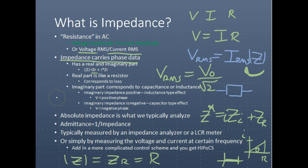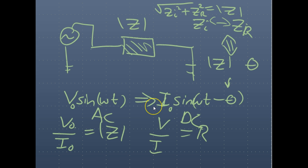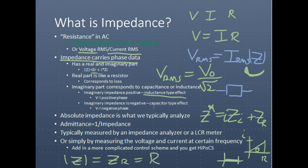The imaginary part can correspond to either a capacitance type of effect or an inductance type of effect. If the imaginary impedance is positive, then we have an inductance type of circuit. If the imaginary impedance is negative, we have a capacitor, and this determines the phase.